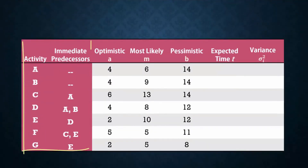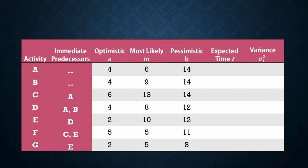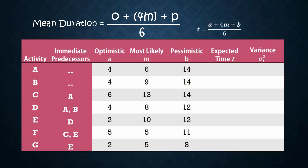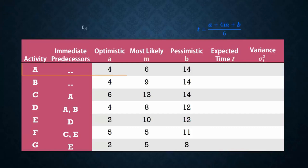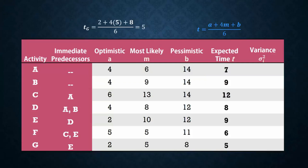Here we have a table showing activity predecessors and their uncertain time estimates. Optimistic, most likely, and pessimistic times are represented by A, M, and B respectively. To calculate the expected time T, we apply the formula T equals A plus 4M plus B over 6. So the expected time for activity A is calculated as 4 plus 4 times 6 plus 14 divided by 6, and that gives 7. We do the same for activities B, C, D, E, F, and G.